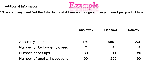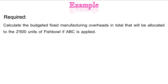The required is: calculate the budgeted fixed manufacturing overheads in total that will be allocated to the 2,500 units of Fishbowl if ABC is applied. Let's go on to our solution.